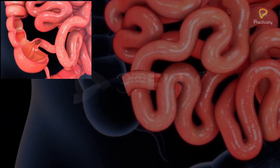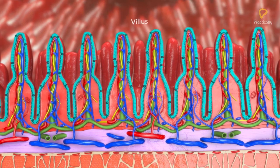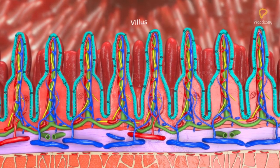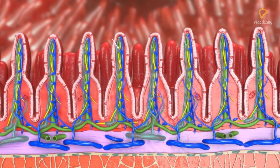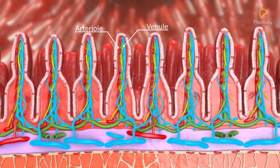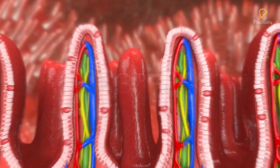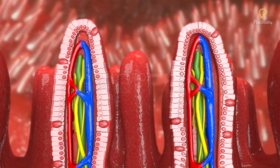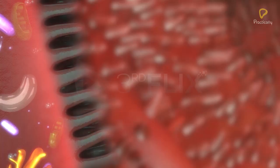The ileum opens into the large intestine. The mucosa of the small intestine shows many folds called villi. The villus is a finger-like process or fold of the mucosal layer into its lumen. It contains an arteriole, a venule, and a lacteal — a lymph vessel. The cells lining the villi produce numerous microscopic projections called microvilli, giving a brush border appearance.